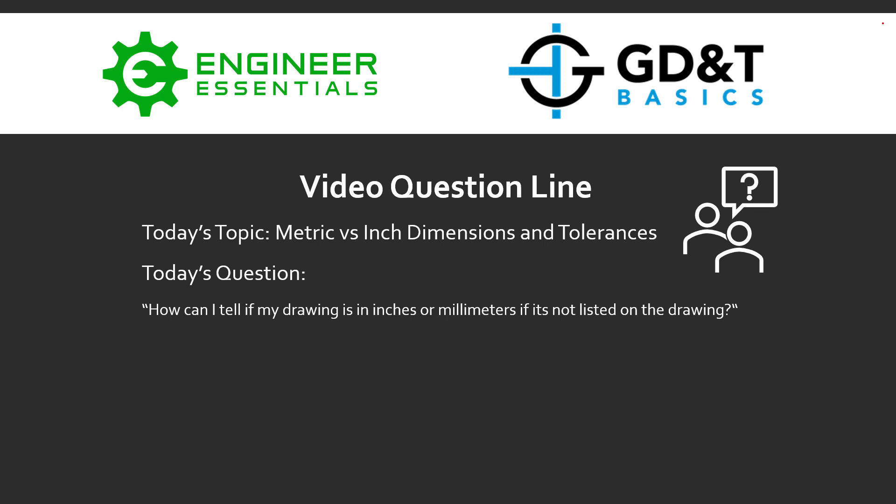This question often comes up when we have zoomed in views of a drawing where we only see the drawing view and not necessarily the title block, and we instantly know that the drawing is in either inches or millimeters. So how is that possible?